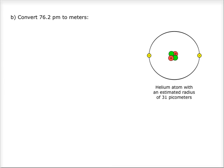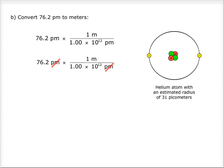Part b: convert 76.2 picometers to meters. You know that there are 1 times 10 to the 12 picometers in 1 meter. Therefore, if you times 76.2 picometers by 1 meter and divide by 1.00 times 10 to the 12 picometers, the picometers cancel out and you are left with meters. There are 3 significant figures, so your answer is 7.62 times 10 to the negative 11 meters.